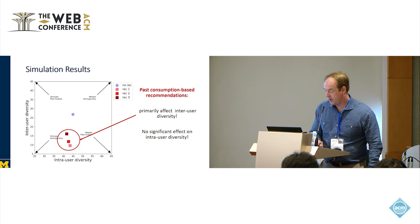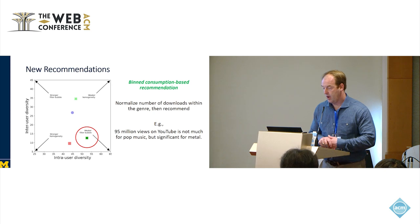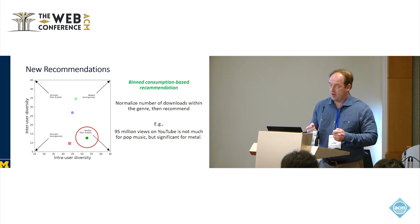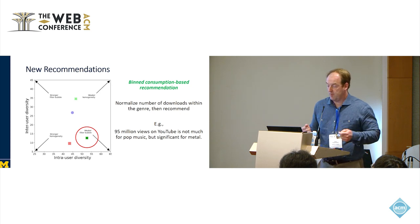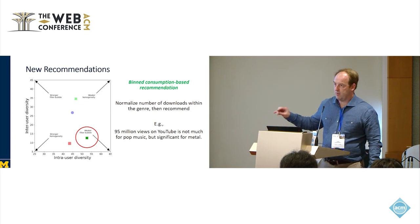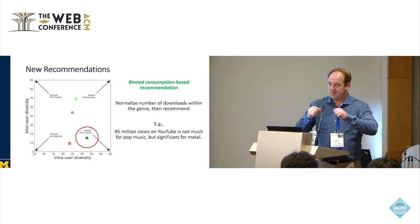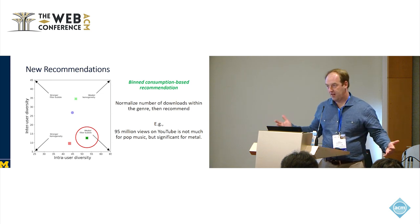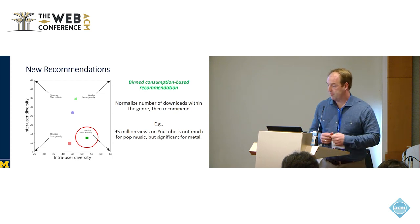The next goal is can we design recommendation systems that do something different? We have a couple of these. The first one is binned consumption-based recommendation. Here we're telling the user not just how many times an item was consumed, but relative to where it is in the distribution, its neighbors, how many times is it consumed, more or less than expected. If you have 95 million views on YouTube, this is Sanzeed's example who put the slides together, if it's pop music, maybe that's not so much. But if it's heavy metal, that's a lot of views for a heavy metal video.